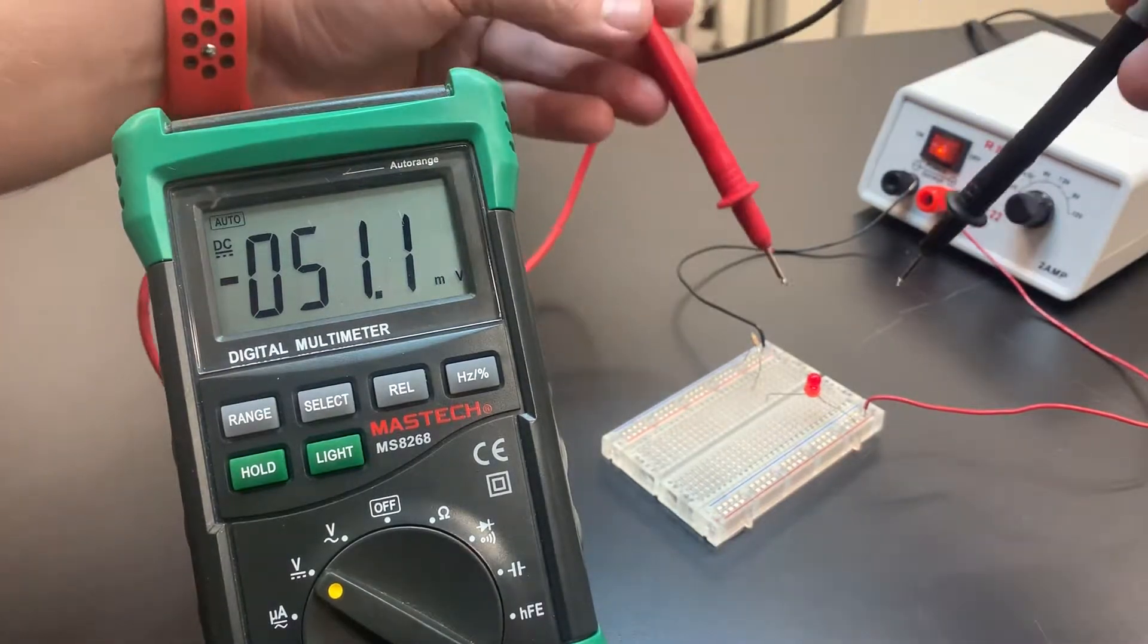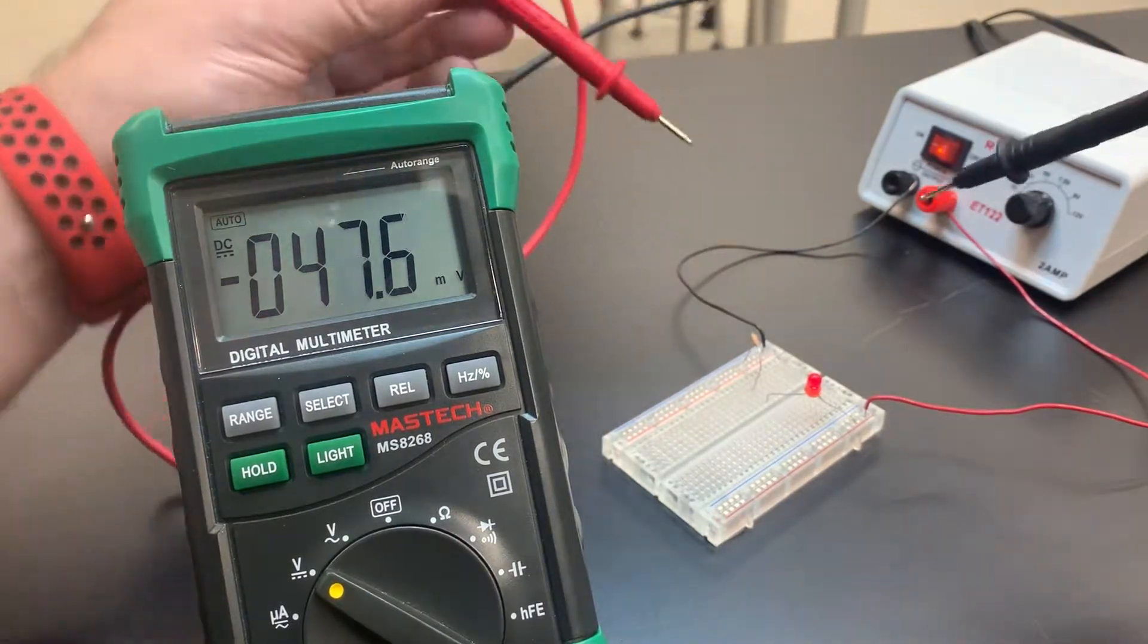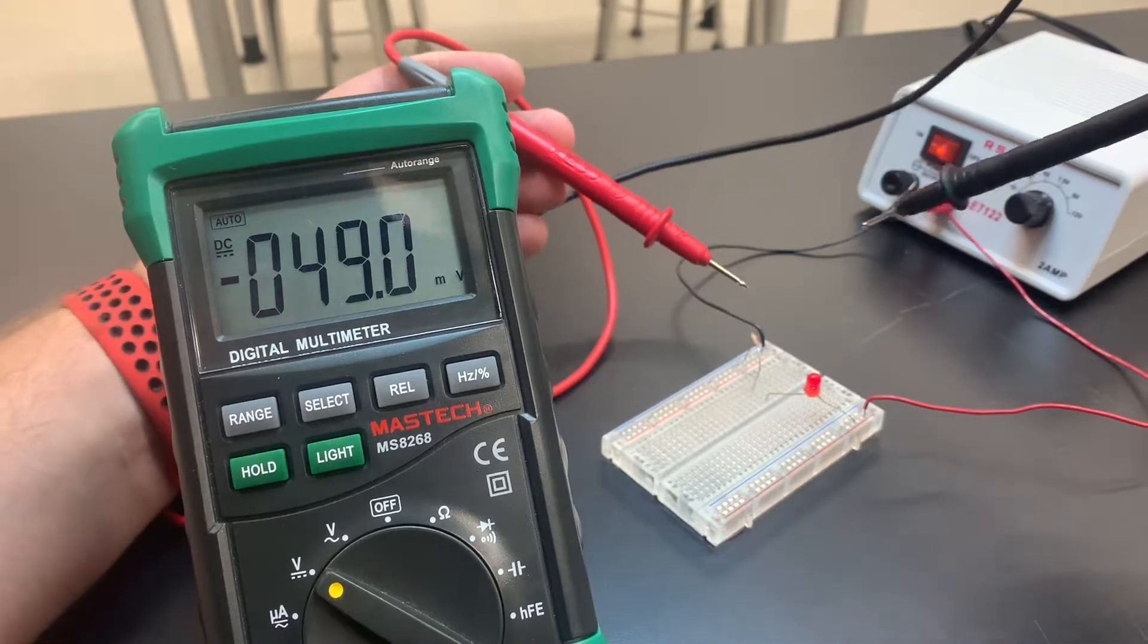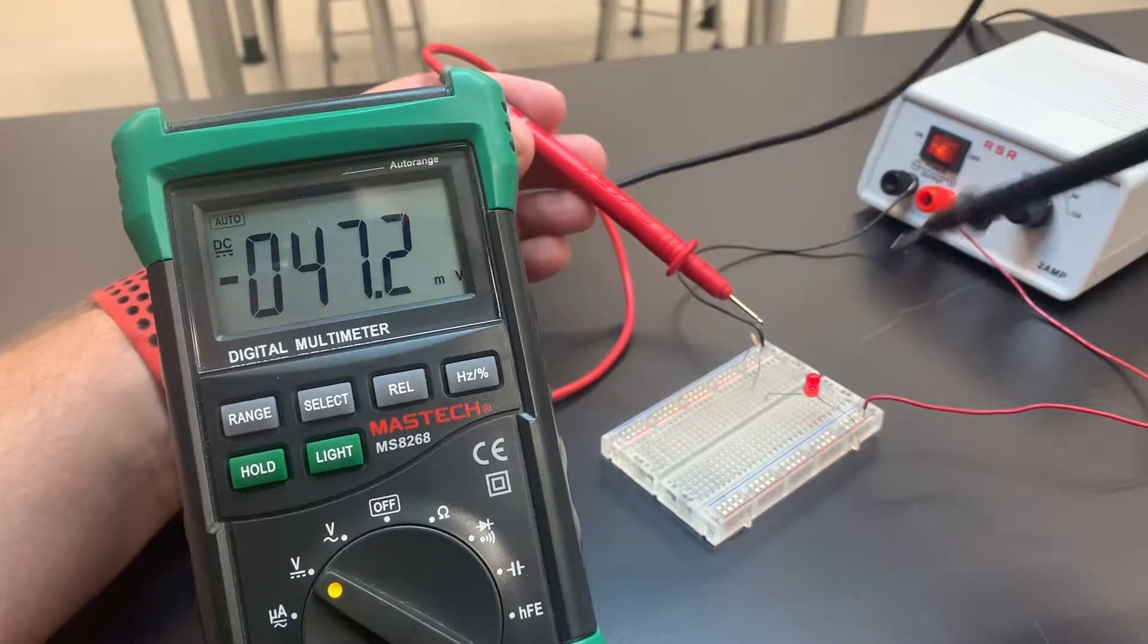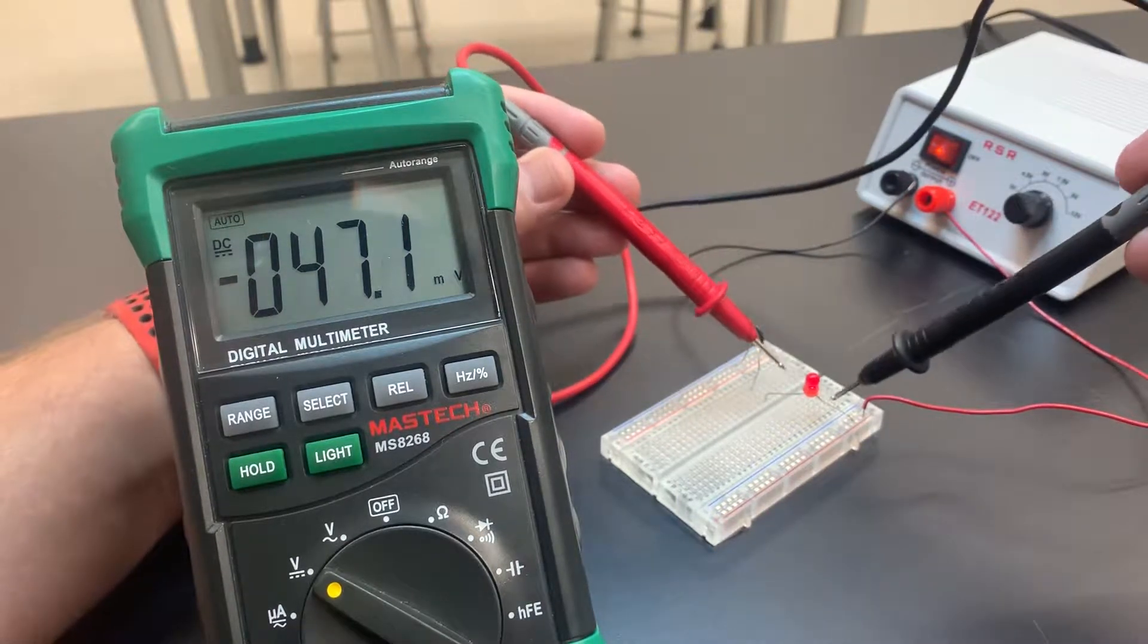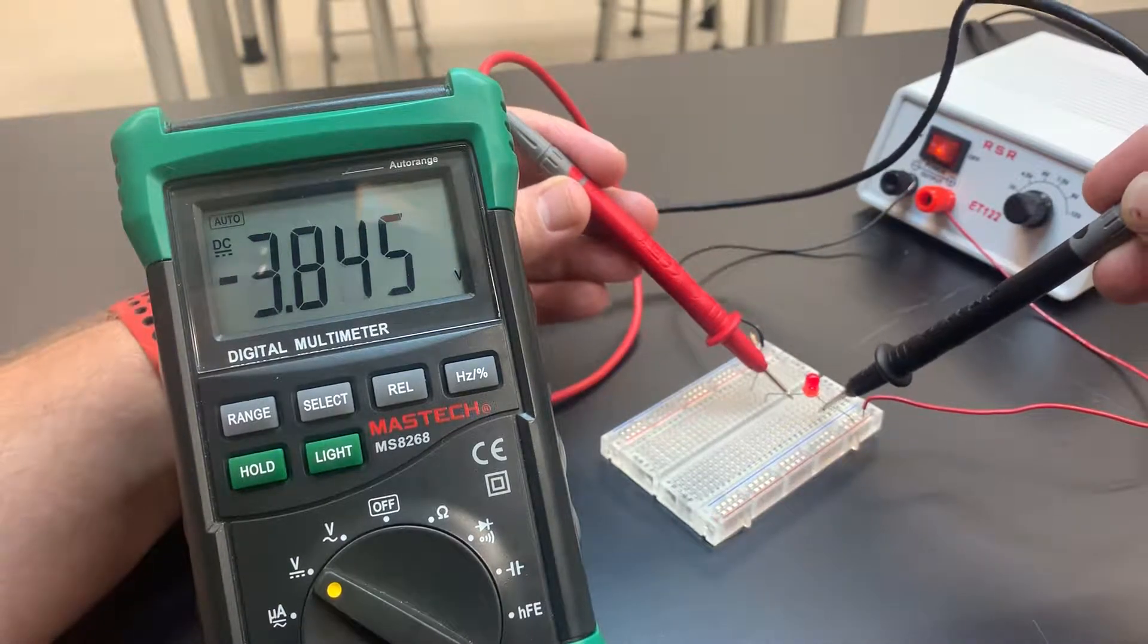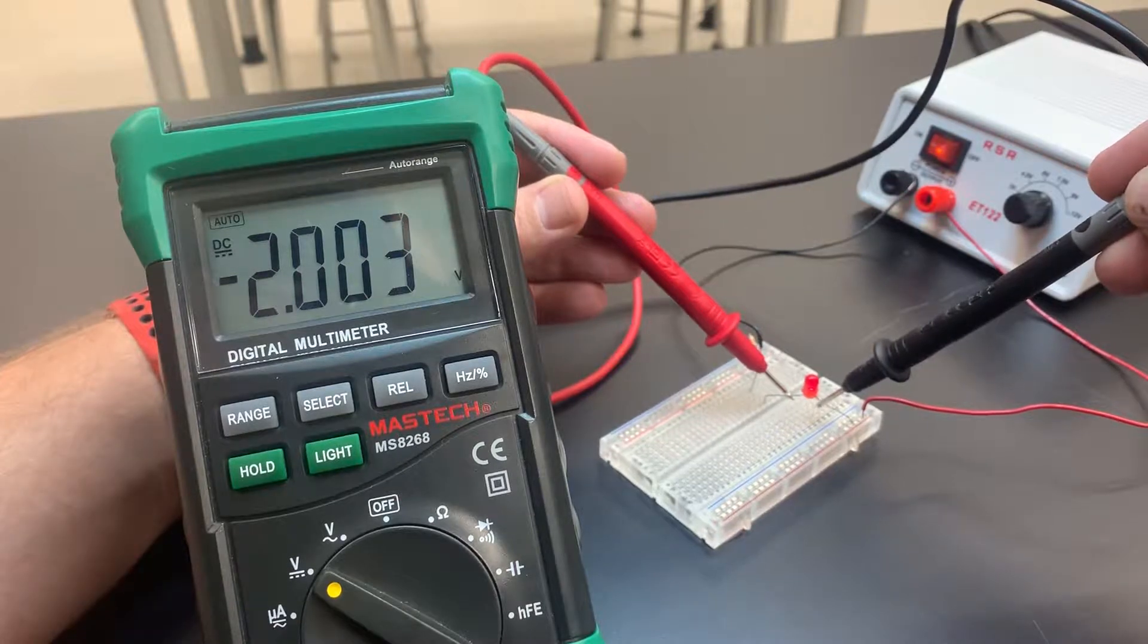We're going to put our multimeter leads in parallel. That means there's two paths for the electricity to flow. One through the LED, which is currently on, set to nine volts, and one path will be going through the multimeter that we'll be measuring.